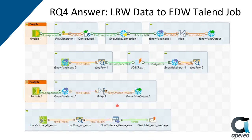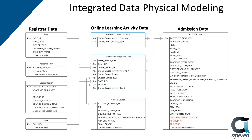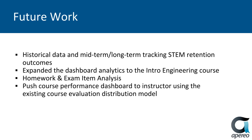This is just a screenshot of all the different components involved in the Talend job. With the data integration, we have access to admission data like students' ethnicity, their cumulative GPA, and all that background information, as well as students' course activity data. Additionally, we have access to registrar data like what courses they're taking and what major they declare. With all this information in a centralized place, we can develop a more holistic view of our students.